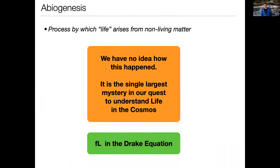The first thing I'll say is that the origin of life is completely unknown. Abiogenesis is the process by which life arises from non-living matter. We think this happened, but we don't have any idea how it happens. We've never made an experiment in the laboratory where it happens.